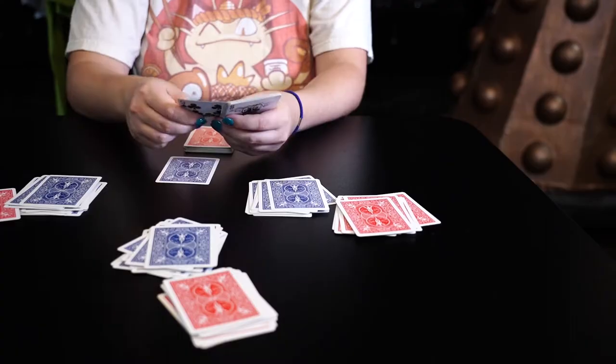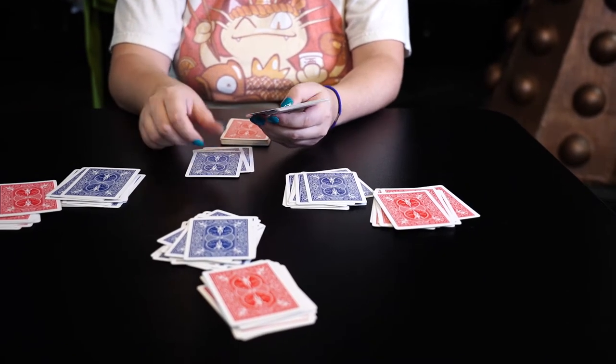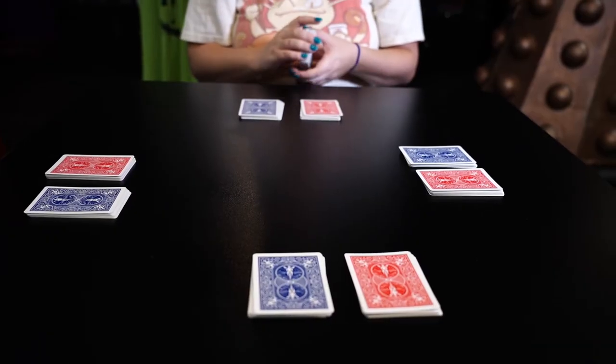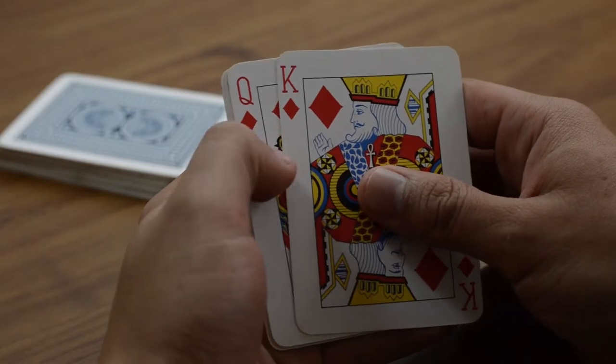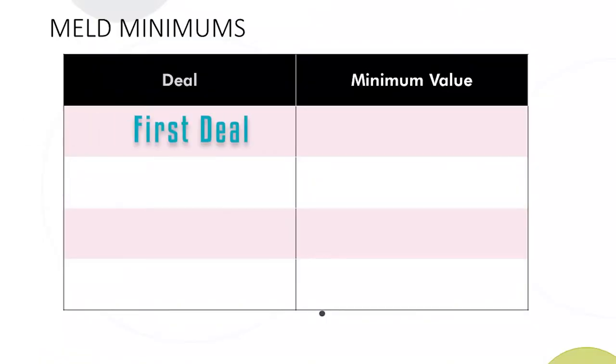Meld minimums. Each deal poses a total point value of the cards which make up the first meld created in partnership. So on the first deal, the first meld you lay down has to be worth at least 50 points. On the second deal, the first meld has to be worth at least 90 points.